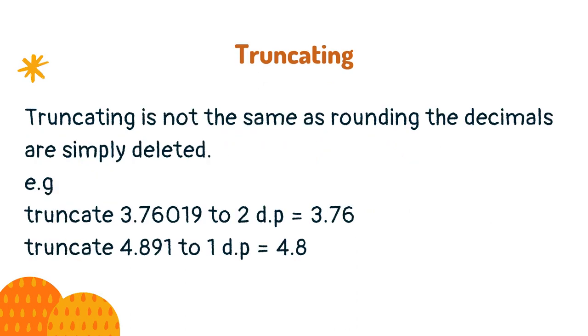Truncating is not the same as rounding; the decimals are simply deleted. For example, truncate 3.76019 to 2 decimal places is approximately 3.76. Truncate 4.891 to 1 decimal place is approximately 4.8.